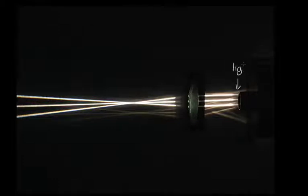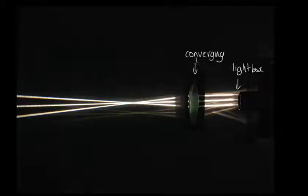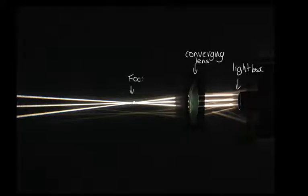Let's have a look at what happens when we shine parallel light beams onto a converging lens. This photograph taken from above shows parallel rays emerging from a light box. These rays come towards a converging lens, at which point they are refracted, and you can see that they all cross each other at a point. This point is called the focus. The distance between the focus and the lens is called the focal length.